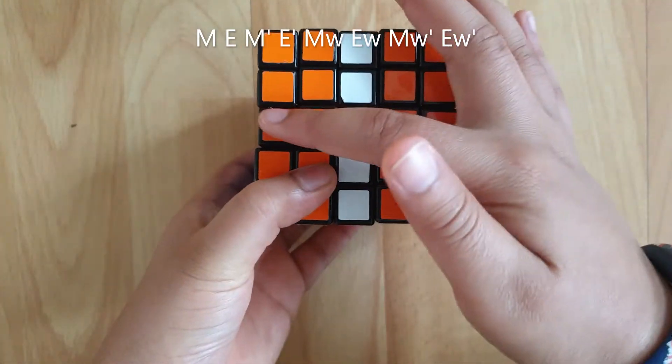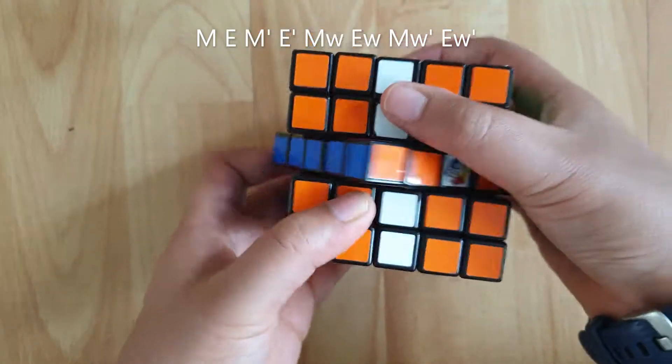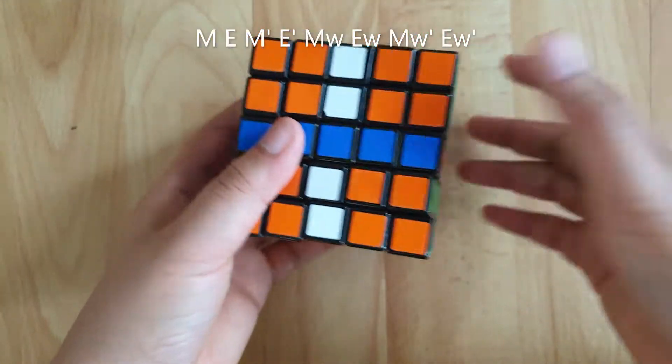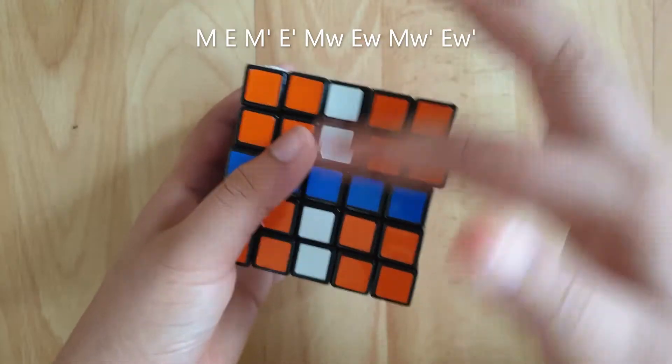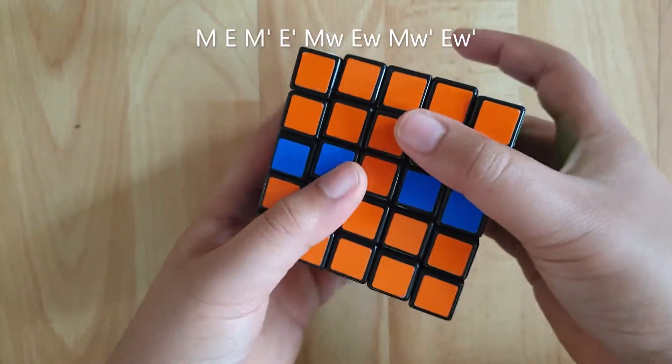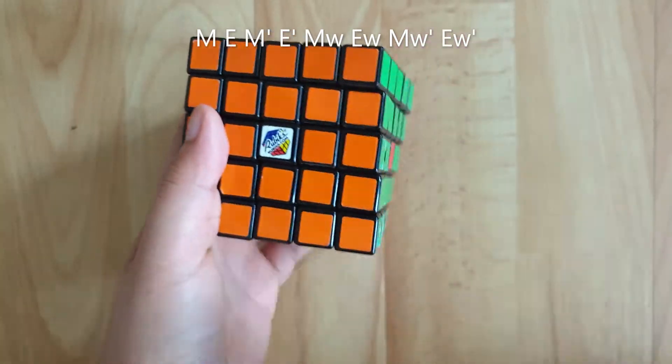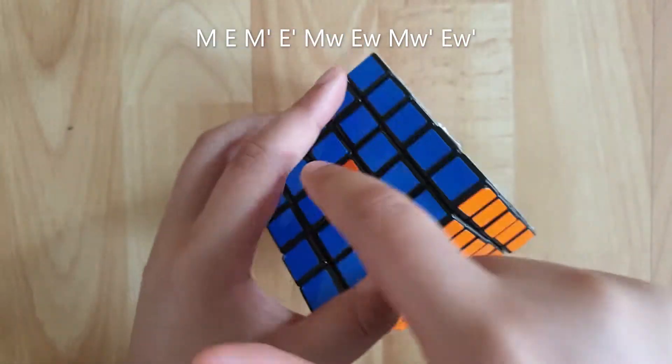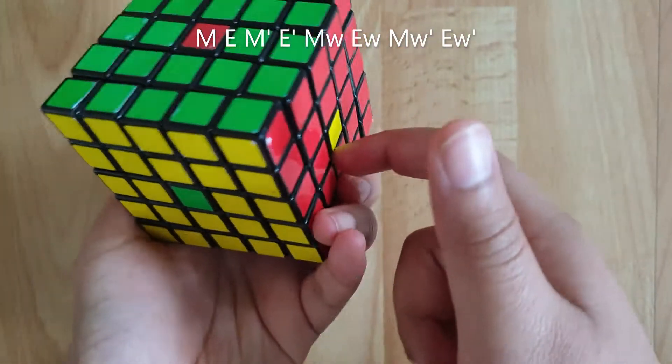Then you need to bring the horizontal middle layer to the right like that, and then reverse your moves. So since we brought it down, we need to bring this back up, and since we brought this to the right, we need to bring it to the left. And now you should have a dot in the center of each face.